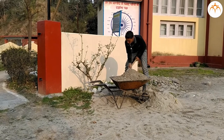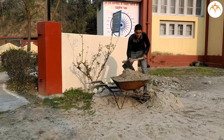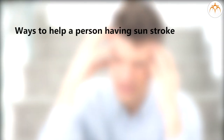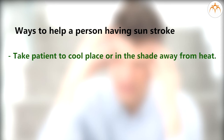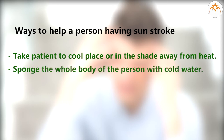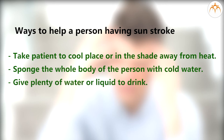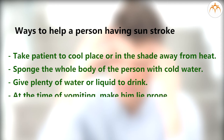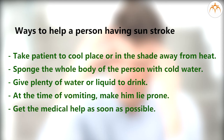In summer, when a person works continuously for a long time, they suffer from sunstroke. The body loses a lot of water and minerals, causing sunstroke. When someone has sunstroke, first take the patient to a cool place or shade away from the heat. Then sponge the whole body with cold water and give plenty of water or liquid to drink. If the patient feels like vomiting, make them lie prone with the abdomen down and head turned to one side, and get medical help as soon as possible.